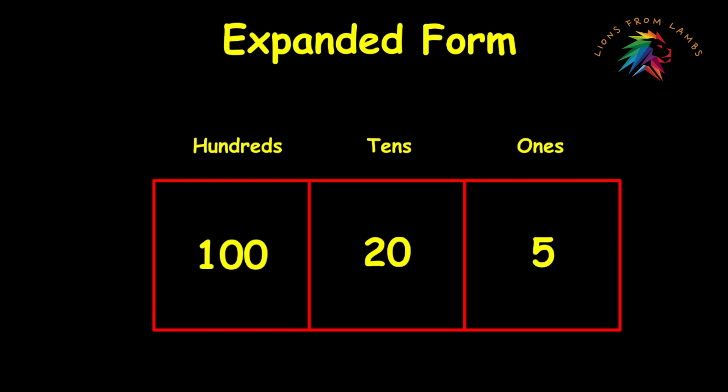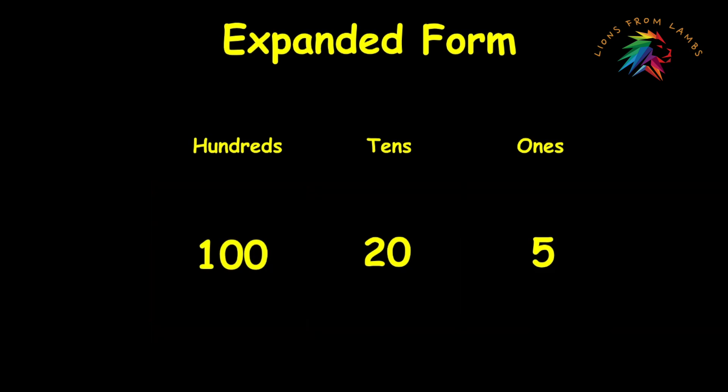To put this into expanded form, we're simply going to remove the frame, and we're going to write these values as they are in an addition sentence. Now we have 100 plus 20 plus 5. That is a numerical representation of the number 125 expanded by place value.